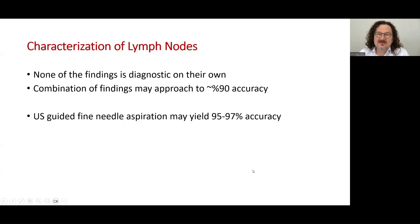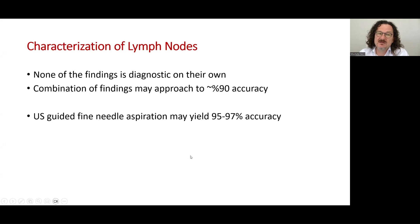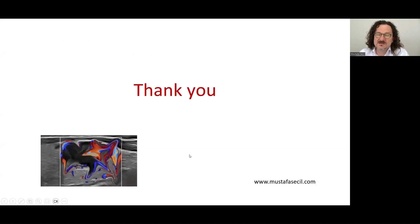For characterization of lymph nodes, one finding alone may be diagnostic, but a combination of findings may approach 90% accuracy. Ultrasound-guided fine needle aspiration may yield up to 97% accuracy, except for lymphoma lymph nodes, because lymphoma cannot be diagnosed by fine needle aspiration. Thank you for listening.